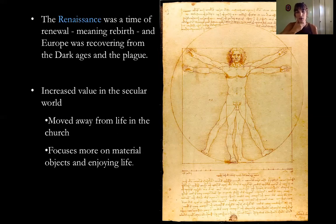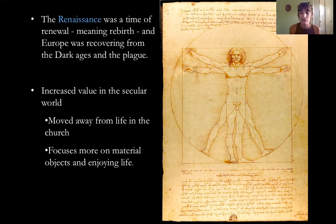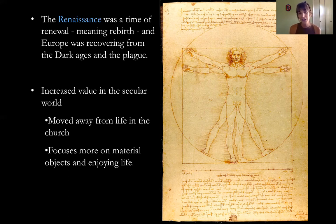We also have this image of the Vitruvian Man — this is by Leonardo da Vinci. It kind of epitomizes this period in time where you have a real re-interest in health, in the human body, in optimal health after this really difficult dark period during the plague. This is the perfect man — the Vitruvian Man. He perfectly fits into a square and a circle. You might have seen this image used as the logo for a hospital, because it really is an image that signifies optimal health and an interest in anatomy.